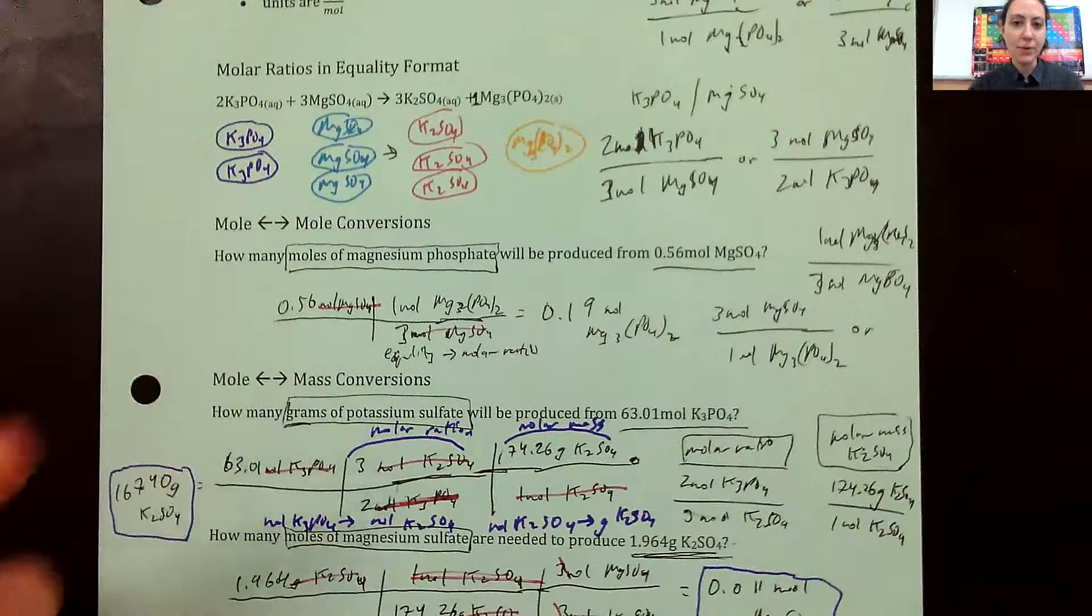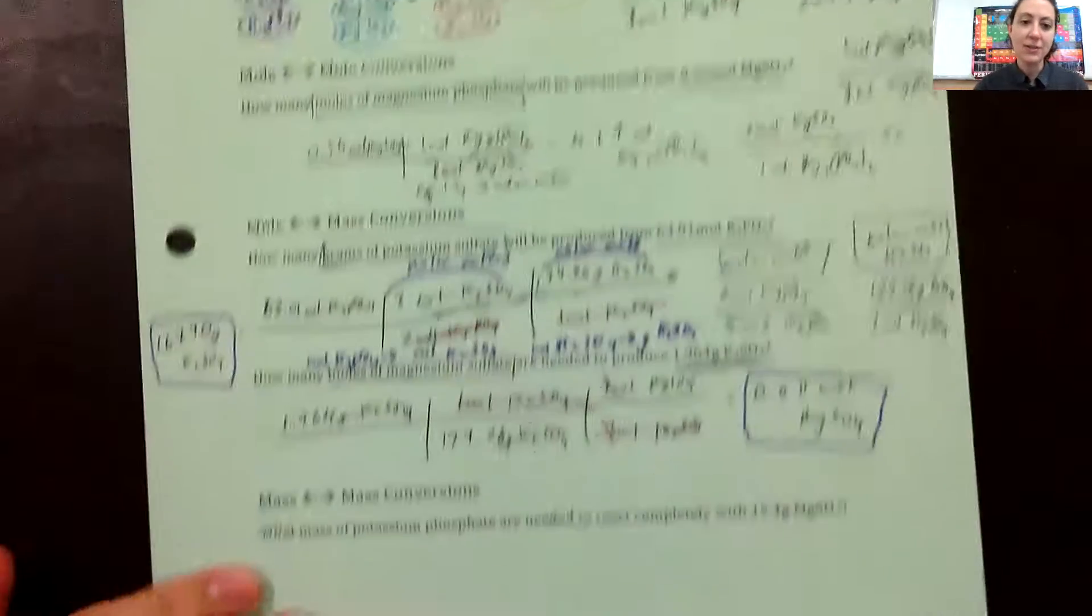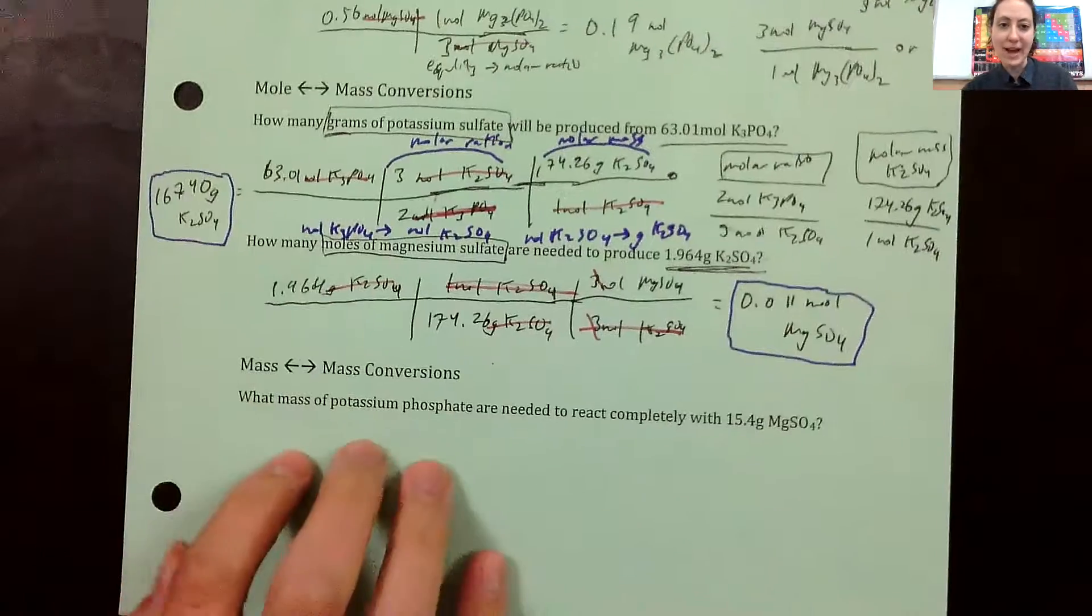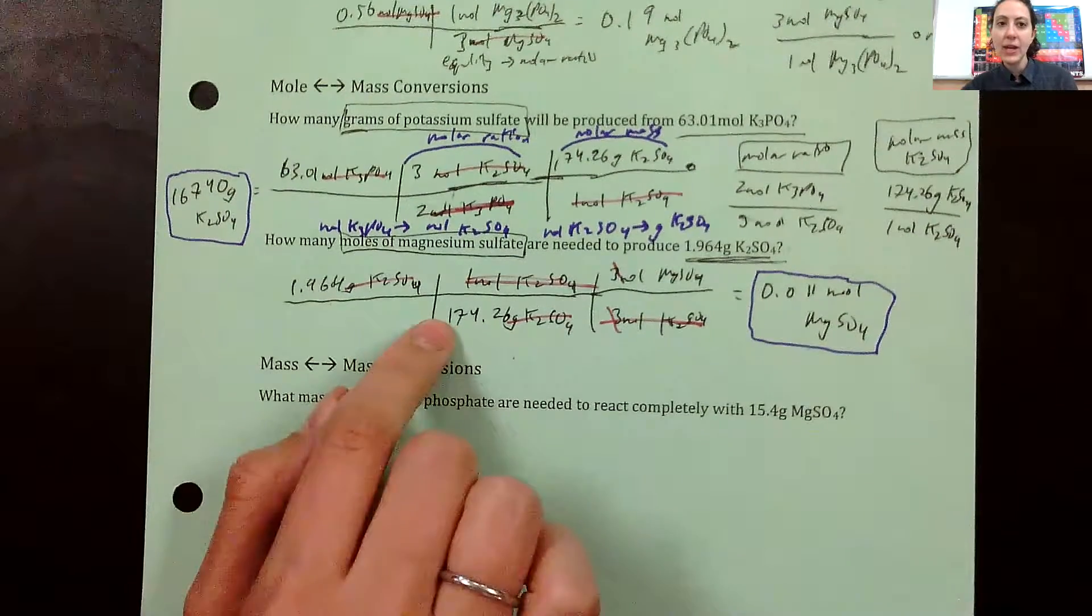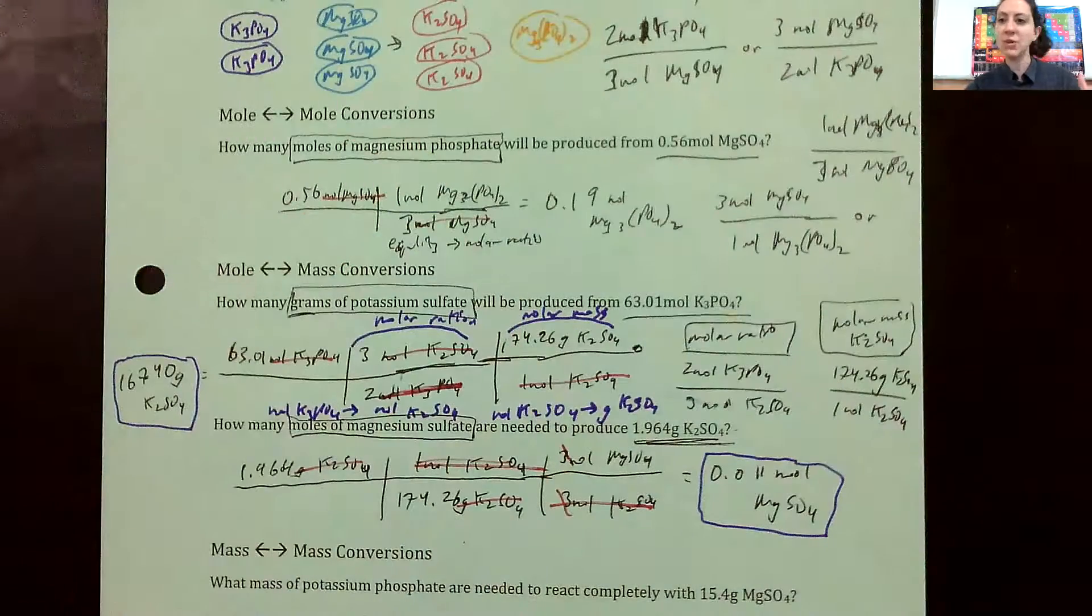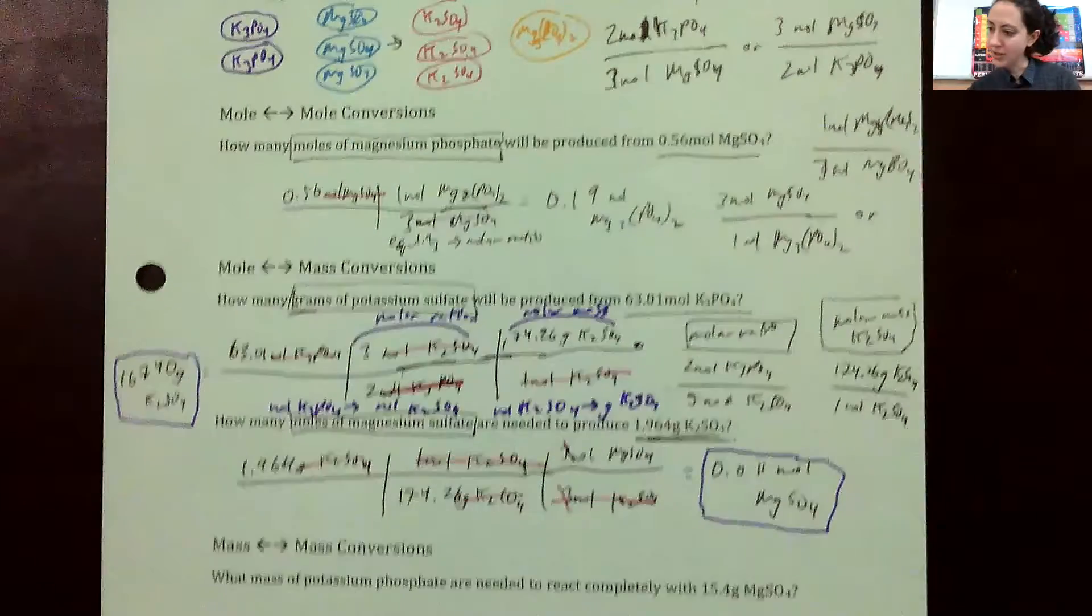We then did some mole-to-mole conversions and mole-to-mass conversions. So now we need to move on to the last part of this page, mass-to-mass conversions. This is really similar to what we did before. The whole heart of this is the mole-to-mole conversion. That's what stoichiometry is all about. And all we're really doing is just continuously adding onto it.